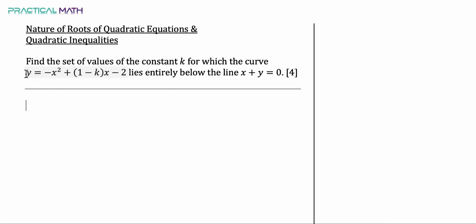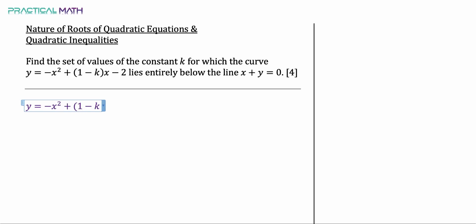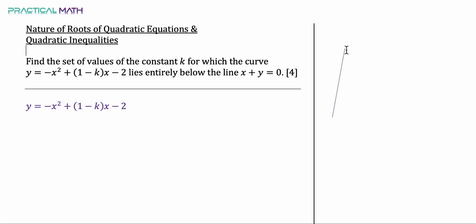We have the curve equation y equals negative x squared plus (1 minus k)x minus 2. Notice that this curve has a negative x squared term. This implies it will be a sad-face curve — by sad-face I mean a maximum curve like this. This is a sad-face curve.